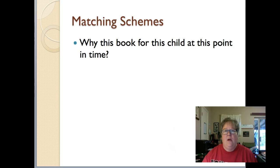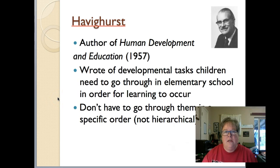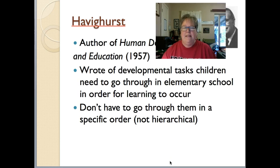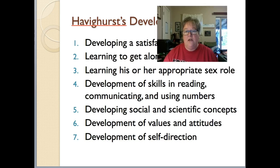We want to think about where kids are developmentally in order to match them to books. The first theorist we want to talk about is Havighurst, who wrote a book in 1957 called 'Human Development and Education.' In it, he talked about developmental tasks that children need to achieve in elementary school for learning to occur. He said they don't have to achieve these tasks in any particular order — it's not a hierarchy. There are seven of them.